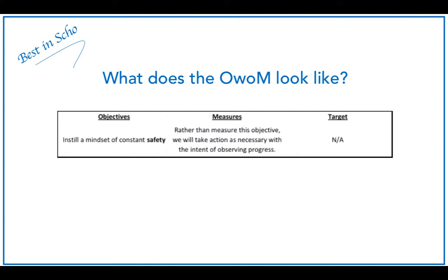Let's have a look at what an objective without a measure might look like on the balanced scorecard. Here's an example of the type of objective I'm seeing more and more clients prefer to adopt: 'Instill a mindset of constant safety' — and keep in mind that could apply to quality, creativity, or a variety of different things. Instead of a clear quantifiable measure, there is a statement: we will take the action as necessary with the intent of observing progress. The key is that this objective receives special treatment because it is an integral part of the strategy — we just can't measure it traditionally.